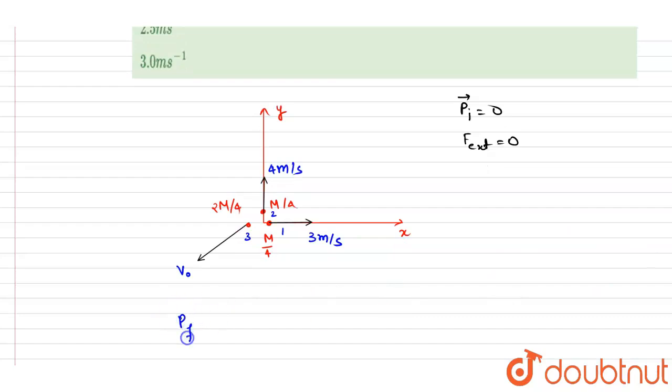So I will write down the final momentum is equal to p1 vector plus p2 vector plus p3 vector. So if you see here, p1 mass of particle one into velocity of particle one, so it will be 4m by 3 i cap. The other particle is moving with 4 meters per second in y direction and mass is the same, so I will write down 4m by 4 j cap, and the p3 we need to calculate.